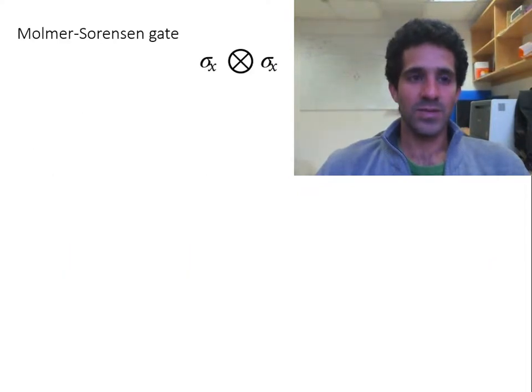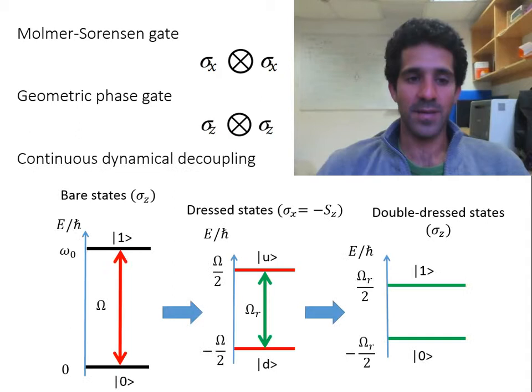In our proposal, we show how to realize the Mølmer-Sørensen gate, or the geometric phase gate with trapped ions, while still being decoupled from the main sources of noise using continuous dynamical decoupling, as I will now explain.